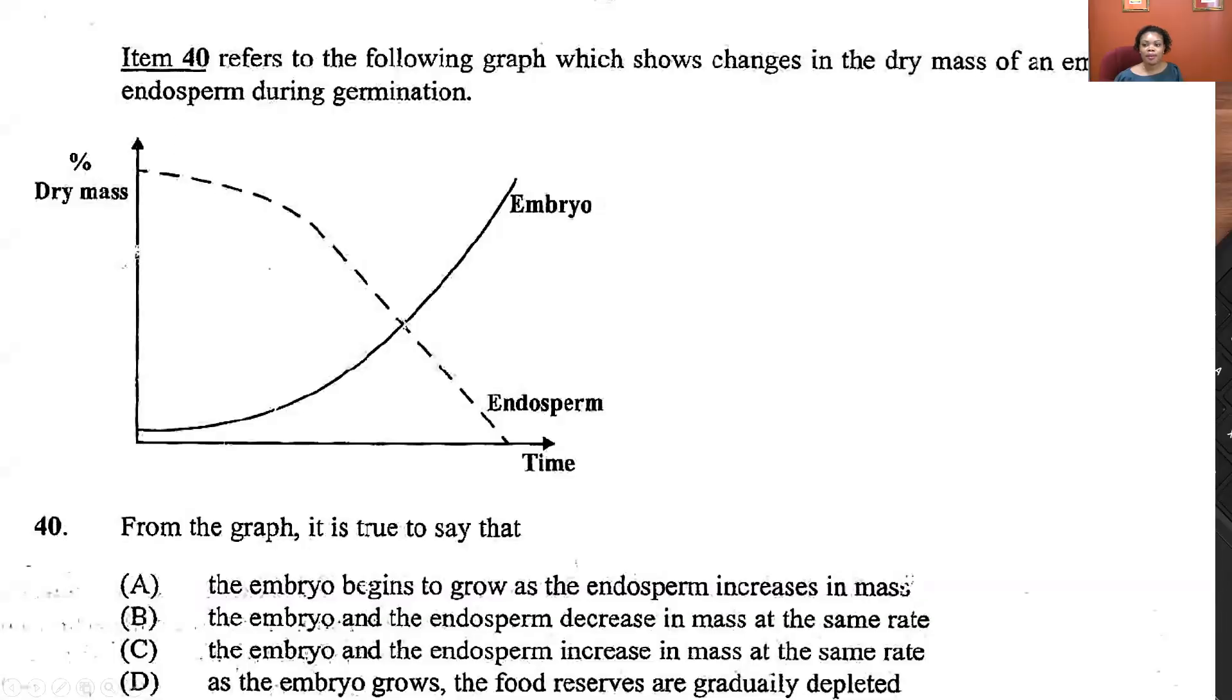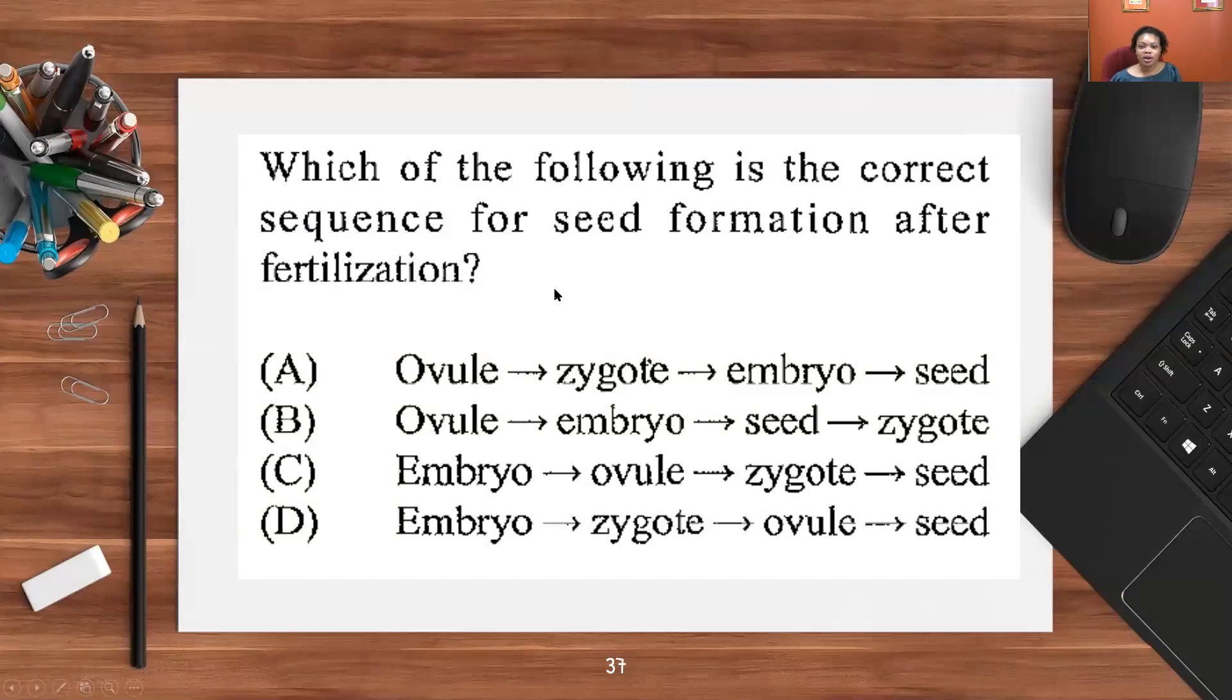Refers to the following graph which shows changes in the dry mass of an embryo and endosperm during germination. Here you have the embryo and you have the endosperm. From the graph, is it true to say that the embryo begins to grow as the endosperm increases in mass? No. They're going in opposite directions as you can see. So the best response here is D: as the embryo grows, the food reserves are gradually depleted. You notice that the dry mass of the endosperm decreases as the embryo dry mass increases. Which of the following is the correct sequence for seed formation after fertilization? After fertilization, you have the ovule being fertilized. This develops into a zygote, zygote into an embryo, and the embryo into the seed. So A is the correct response.